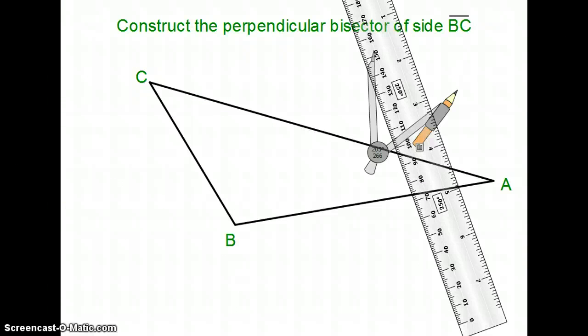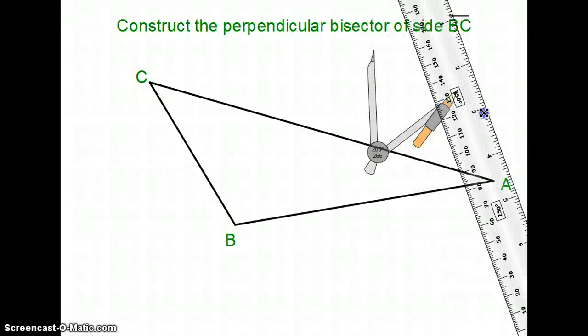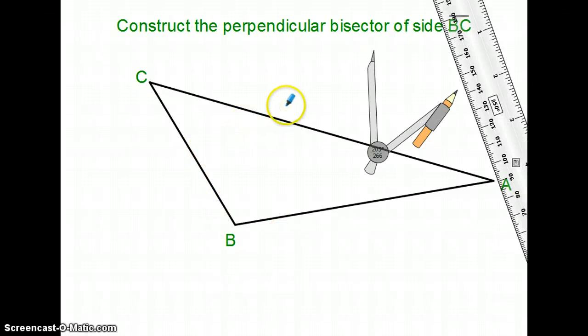Alright, construct the perpendicular bisector of side BC. Same thing. Perpendicular bisector is the football. I'm kind of looking for this line here. Again, ignoring AC. This has nothing to do with AC or AB. Just kind of trying to focus on this segment B to C and I'm trying to find the perpendicular bisector of it.